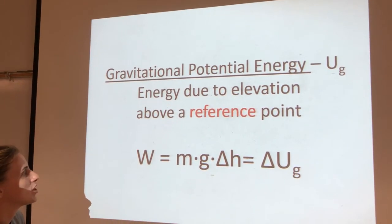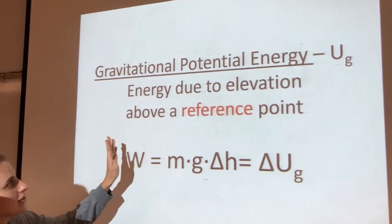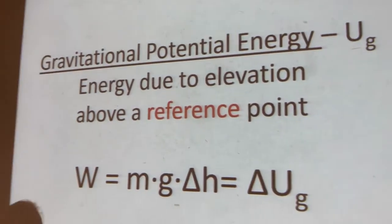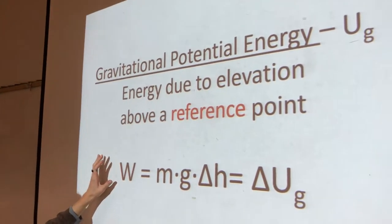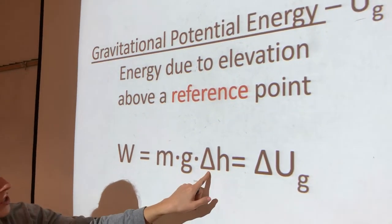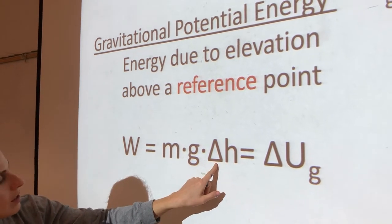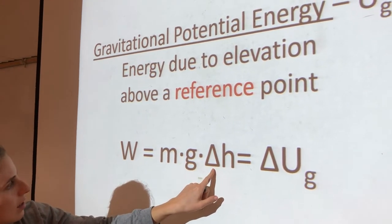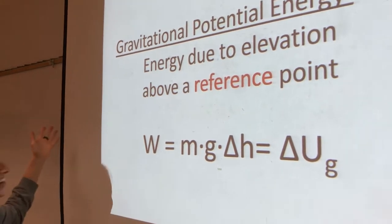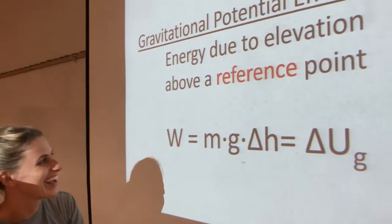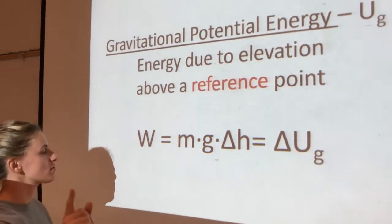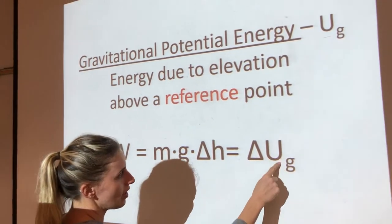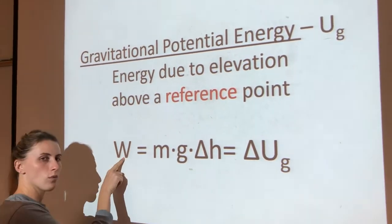Energy due to elevation above a reference point. So, here is our equation that we will use to calculate Ug. mg∆h. That's what we did for the do now. That was the mass times the acceleration due to gravity times the displacement. But I think something really important here is that we have to realize that Ug, the change in Ug, is equal to our work. That's right. So we can set them equal to each other.